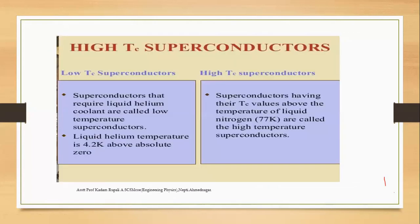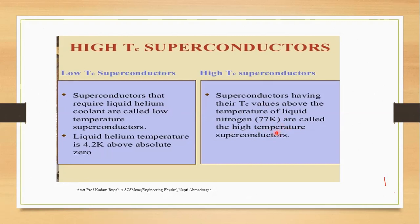The lecture covers low critical temperature and high critical temperature superconductors. Superconductors that require liquid helium cooling are called low Tc superconductors. High Tc superconductors have a critical temperature above the temperature of liquid nitrogen, which is 77 Kelvin. Those with Tc above 77 Kelvin are called high temperature superconductors.